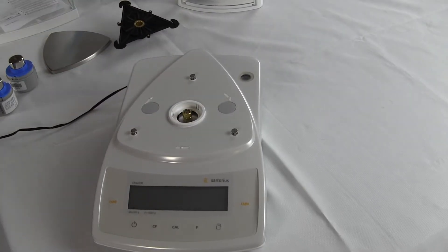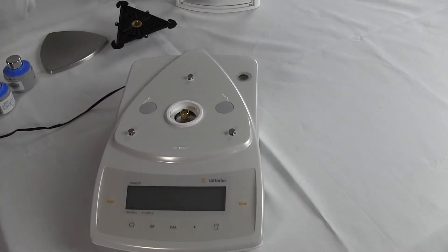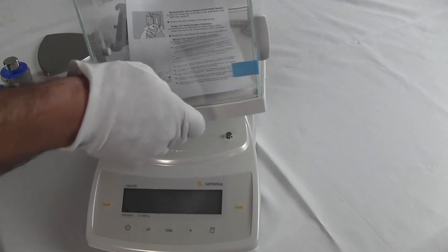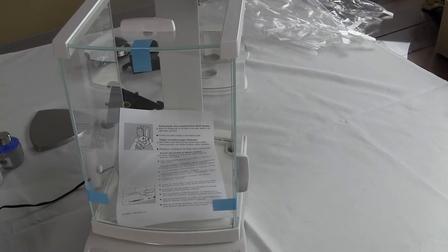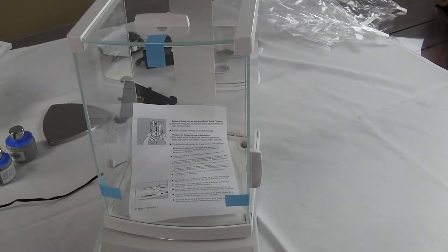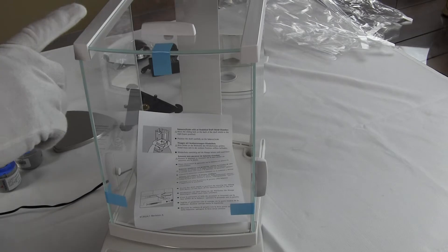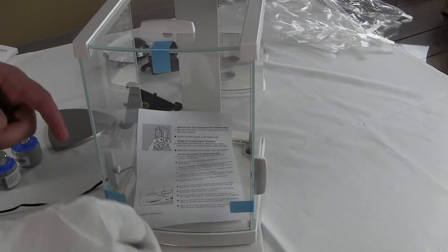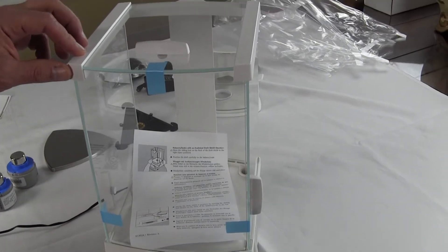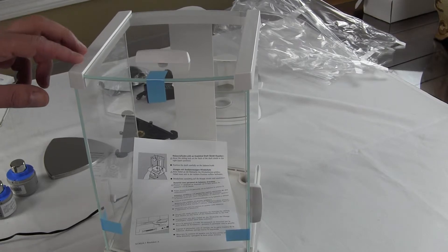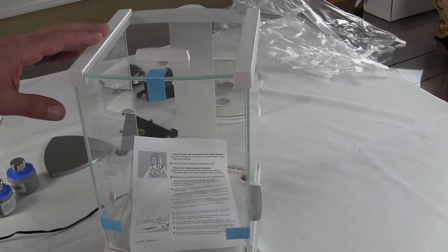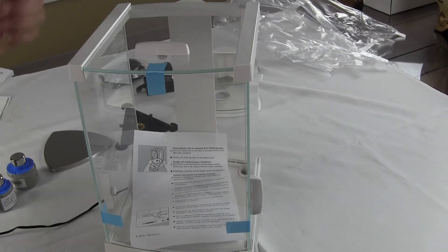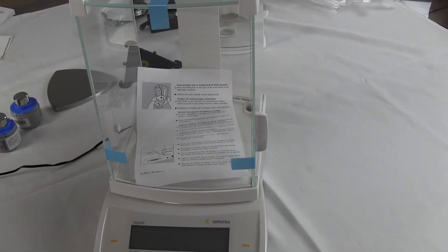Now I want to show you, you can also purchase from Sartorius, this is their optional taller glass draft shield. It goes right on this balance. Now, this part number is the YDS-01CP. This is an optional three-door glass draft shield. One would buy this, especially if you were doing specific gravity. If you bought the specific gravity kit, you really need to buy the full draft shield with a much taller height.